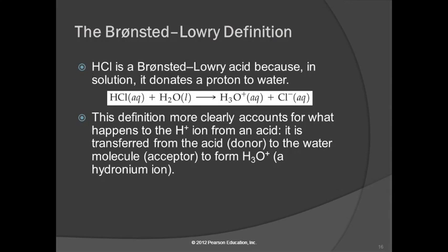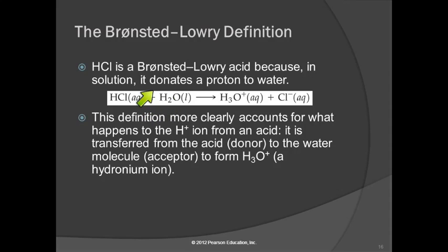HCl is a Brønsted-Lowry acid because when we put it in water, it donates its proton to the water molecule, and we end up with a hydronium ion and a chloride ion. In this situation, the water is accepting the hydrogen ion — the water is the proton acceptor. So the water molecule is acting as the base, the babysitter for that hydrogen ion.